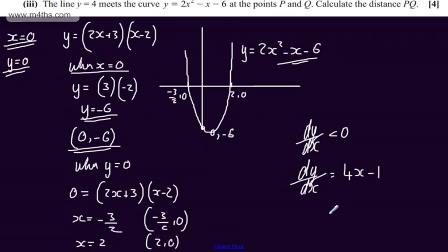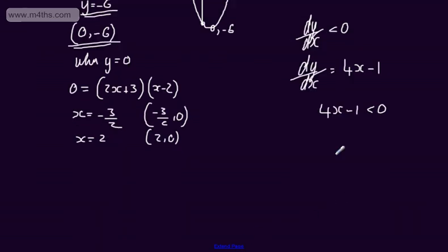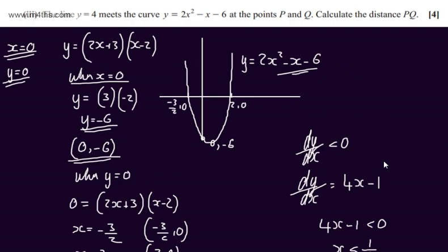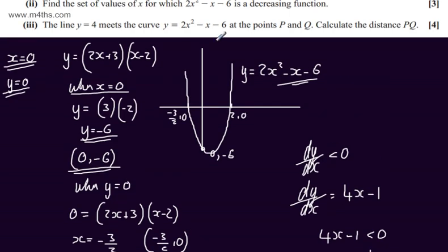So all I'm going to say is that 4x minus 1 will be less than 0. Solving the linear inequality, we can say that x will be less than positive 1 quarter. So those are the values of x for which this is a decreasing function.